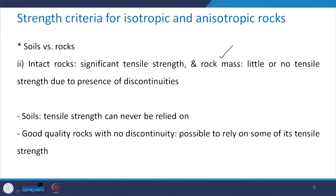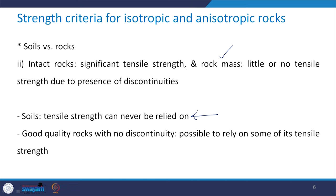The second aspect where I can compare soil versus rock is that in case of the intact rock, we get significant tensile strength. In case of rock mass, little or no tensile strength is there because of the presence of the discontinuities. But what happens in case of soils? The tensile strength of the soil cannot be relied on, and therefore this does not make any sense. Good quality rocks with no discontinuities — it is possible to rely on some tensile strength, but not in case of the rock mass.